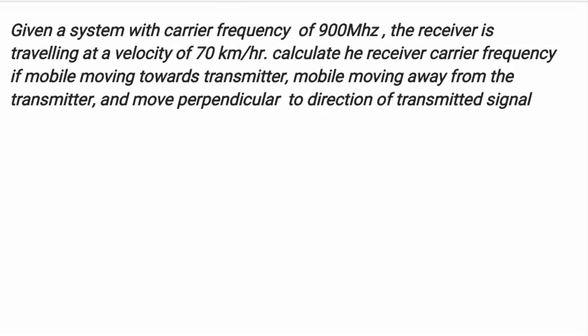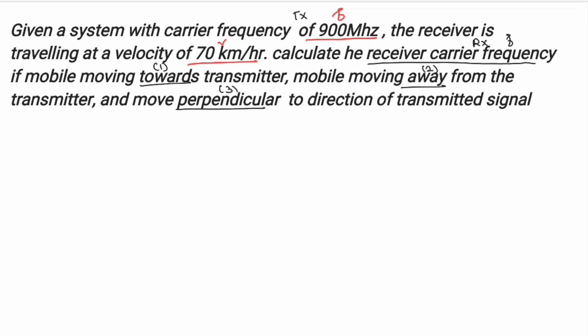Let us see a problem to clarify the concept. Given data: carrier frequency F = 900 MHz, receiver is travelling at a velocity V = 70 kilometers per hour. We have to calculate the receiver carrier frequency under three conditions: first, the mobile is moving towards the transmitter; second, moving away at 50 degrees; and third, moving perpendicular.